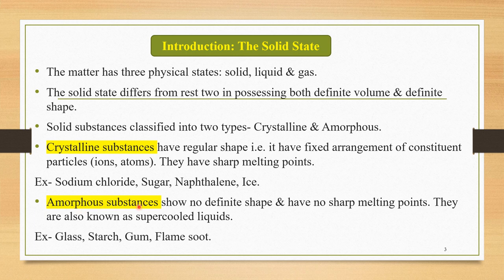The second type, amorphous substances, show no definite shape and have no sharp melting points. The simple difference is that crystalline substances have regular shape and sharp melting points, while amorphous substances do not. Amorphous substances are also known as supercooled liquids. Common examples include glass, starch, gum, and flamesuit.